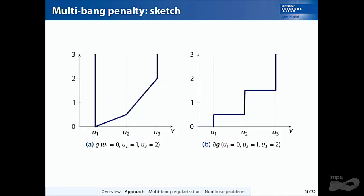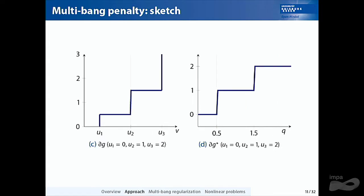Pictorially: for three desired values 0, 1, 2, the multi-bang penalty has constant derivative on each linear piece and set-valued sub-differential at the kinks. Flipping along the diagonal via the inverse function theorem gives the sub-differential of G*: it takes exactly the values 0, 1, 2, with set-valued intervals only at the intermediate critical slopes. The optimality condition says U is pointwise in the sub-differential of G*, so almost everywhere U attains one of the desired values.